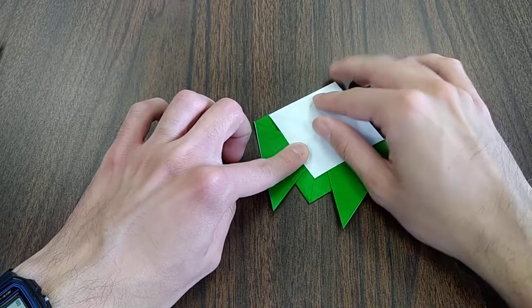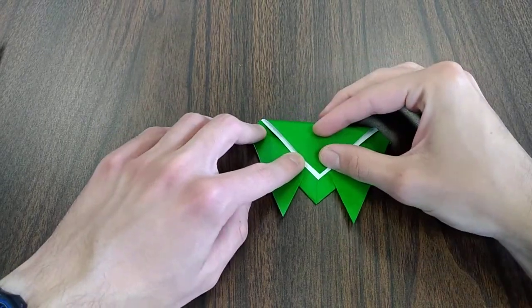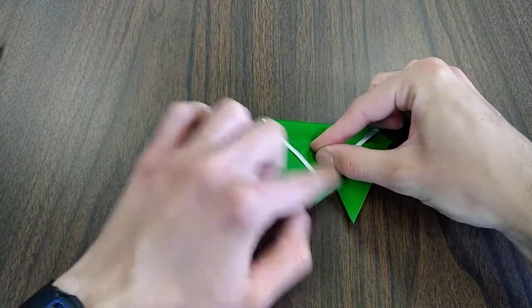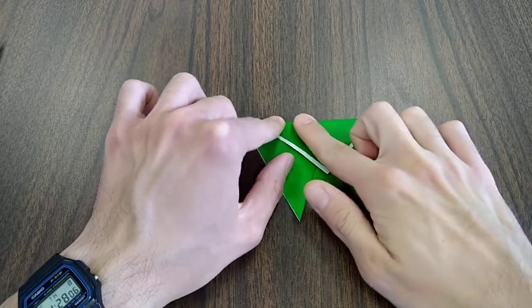Now, let's take the second flap and fold it just a little bit above the first one, so we have a nice white stripe here. Very good.